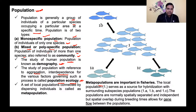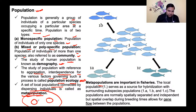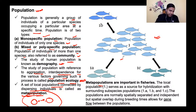In population ecology we study the aggregation and interdependence of various factors governing such processes. A set of local populations connected by dispersing individuals is called a meta-population. So, two populations in different areas that are interconnected through certain sparse residing individuals form a meta-population. Meta-populations are very important in fisheries.